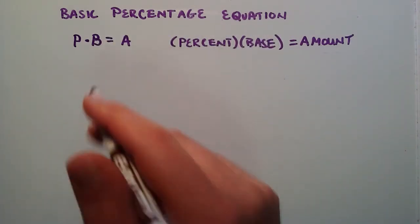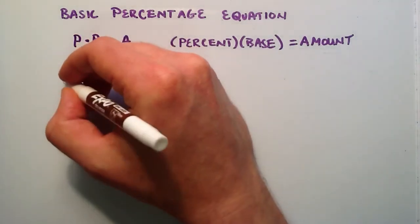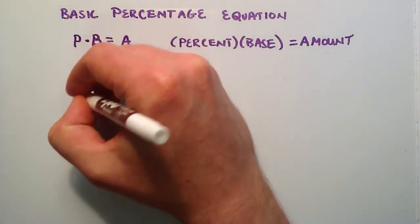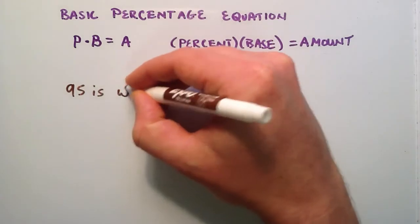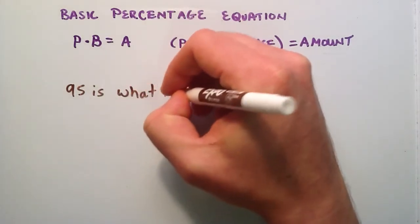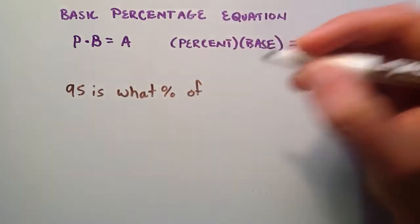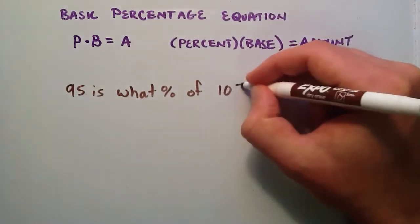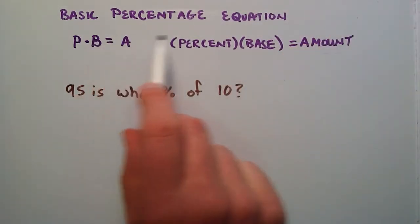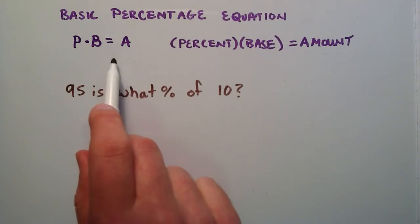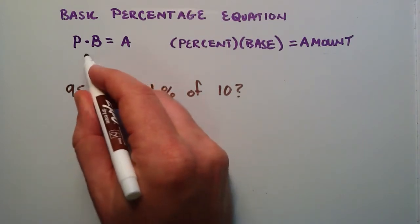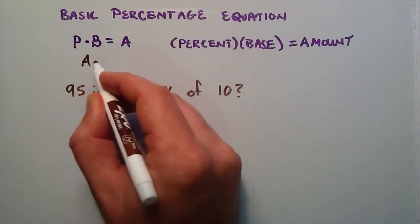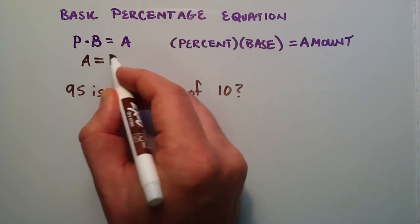A question you might be asked looks like this: 95 is what percent of 10? You can use the basic percentage equation to figure this out. But what I like to do is rewrite it when you're dealing with a question like this. I like to say that A equals P times B.